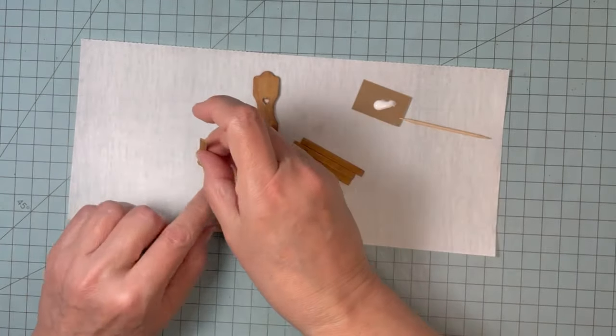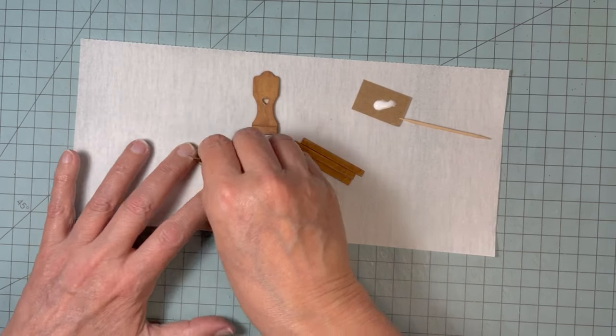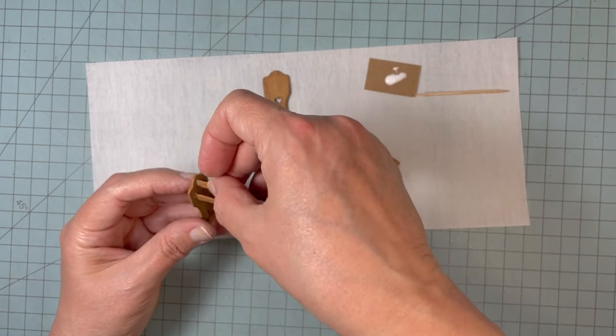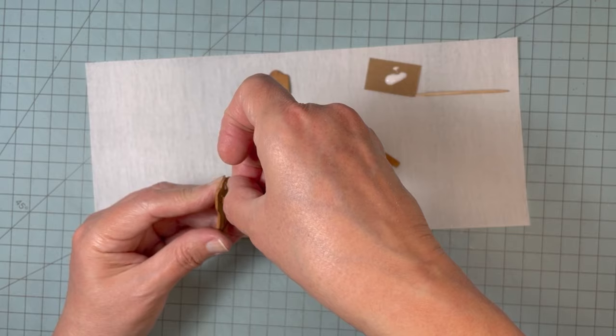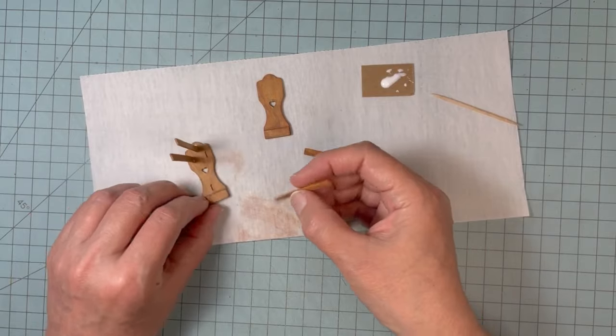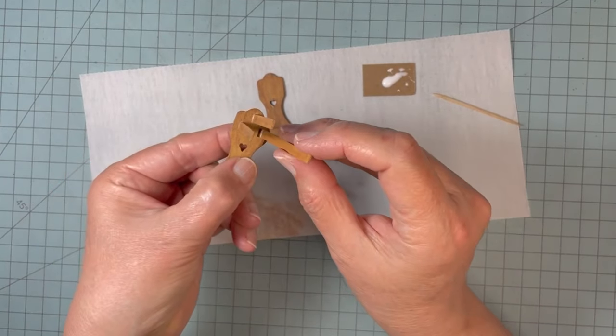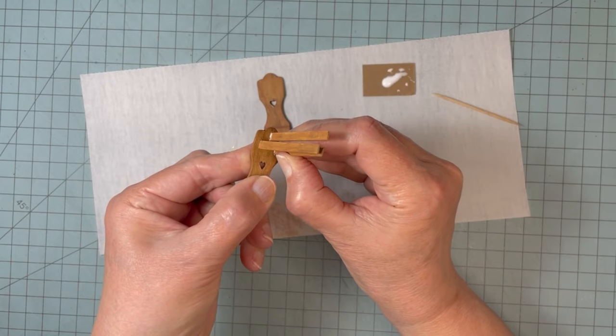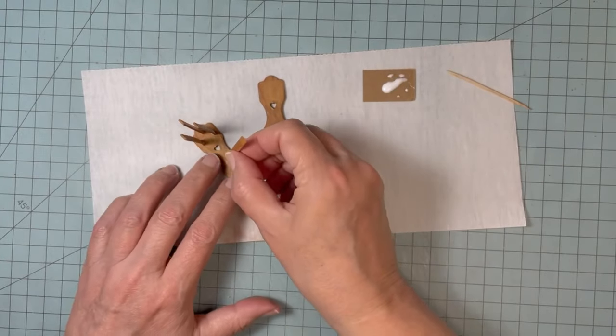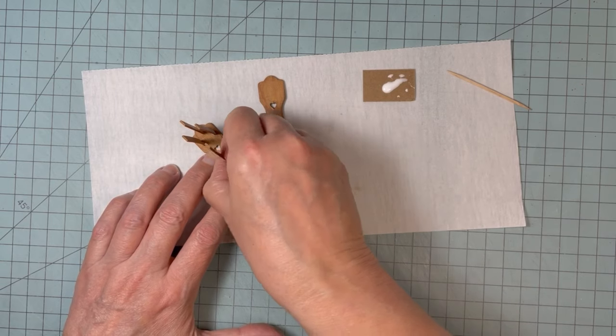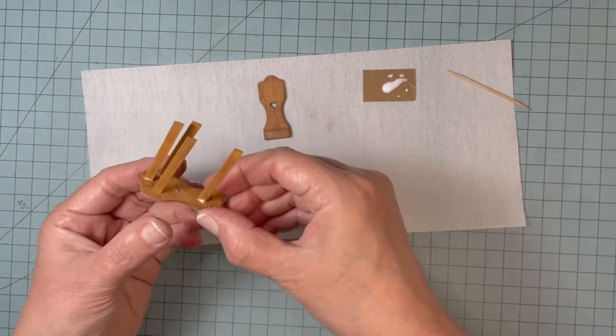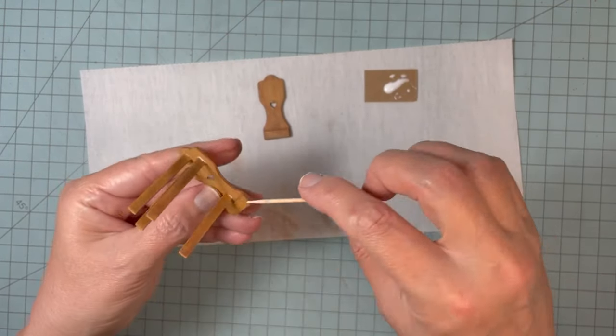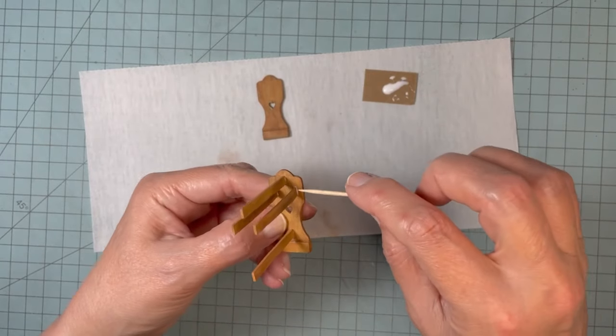Here I'm gluing the support bars onto one end of the quilt rack, and I'm using those little slits that I made as a guide. And also they give the glue a little something to hang on to. I'm taking the end of my toothpick and I'm wiping away the glue that has oozed out when I place the support bars in. And then I let it dry completely before I try to glue it to the other end of the quilt rack.